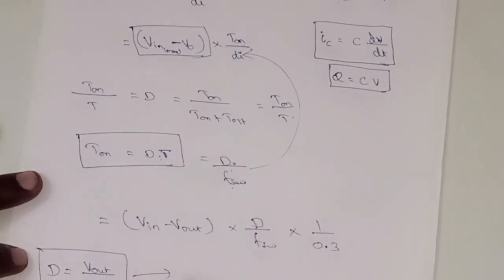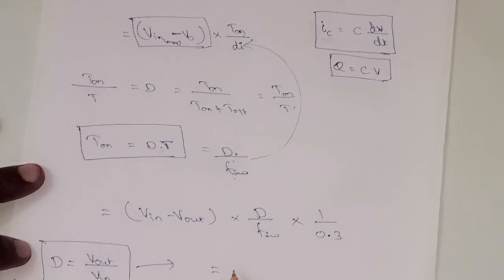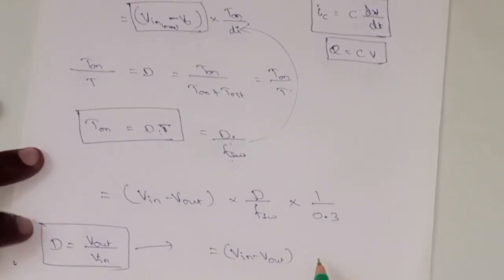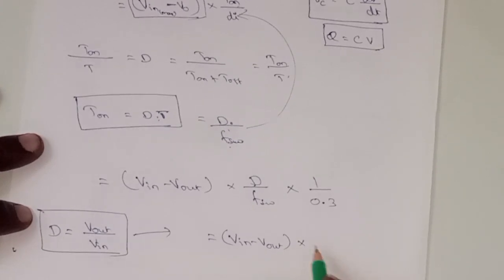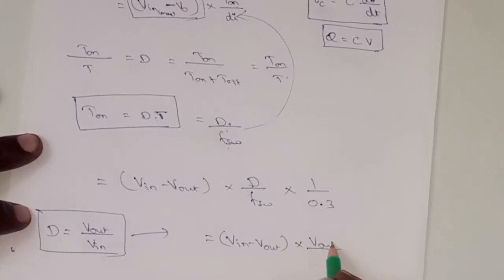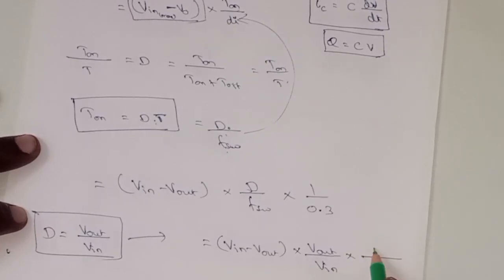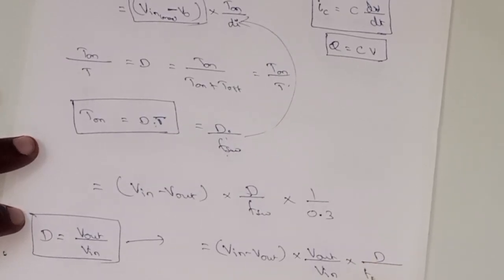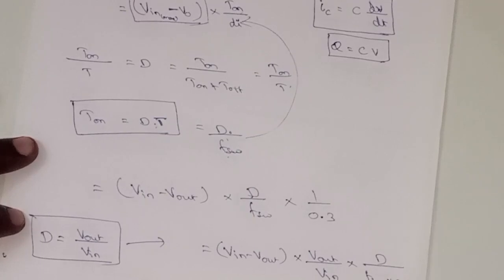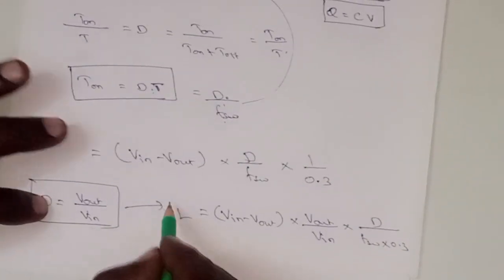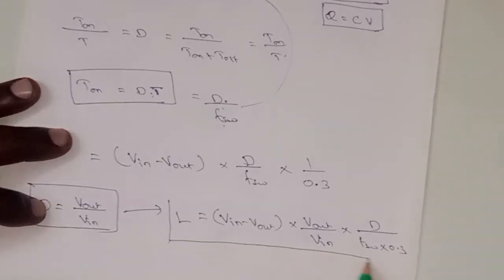So replacing this value here, what will come here? VIN minus VOUT into duty cycle, that means VOUT divided by VIN, into D by switching frequency into 0.3. This is the equation for the inductor value. This is a simple one.